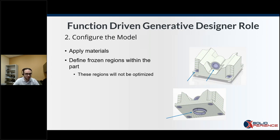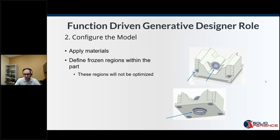Next, we apply frozen regions within the part. The purple volumes are volumes that will not be touched — in this case, a bearing surface in the middle, four bolt holes, and a positioning ring at the bottom. These areas will not be optimized and will stay exactly as is. For example, if our bolt needs a radius of four millimeters to structurally adhere the part to another part, we specify don't touch four millimeters on the radius of the bolt.